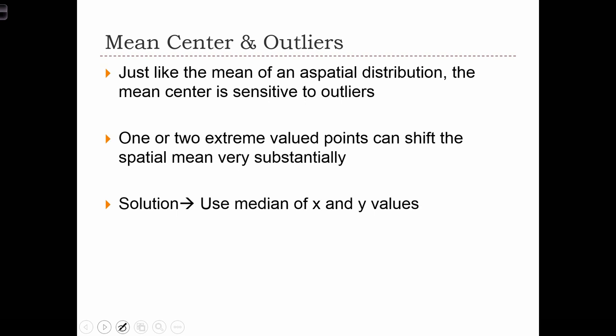I should caution you that mean centers are sensitive to outliers, just like how the mean is sensitive to large outliers in the aspatial case. So in this case, one or two extreme valued points or one or two points that exist far away from the cluster of other points may very substantially shift the mean in that direction. So we have a few solutions to deal with that. We can remove the outlying points if we like, or instead of using the mean,